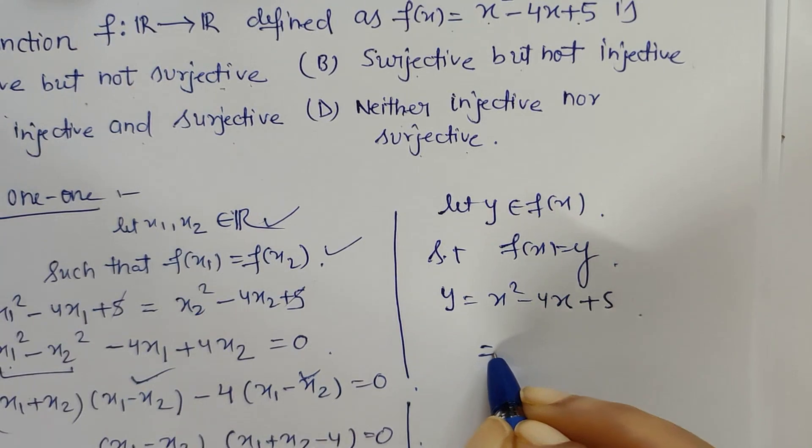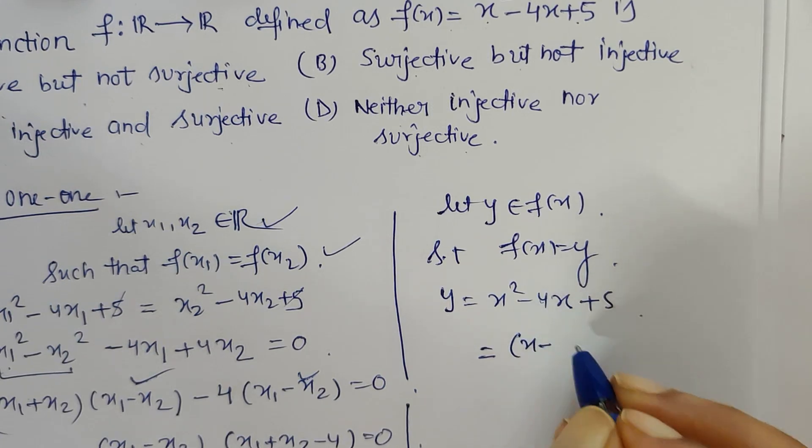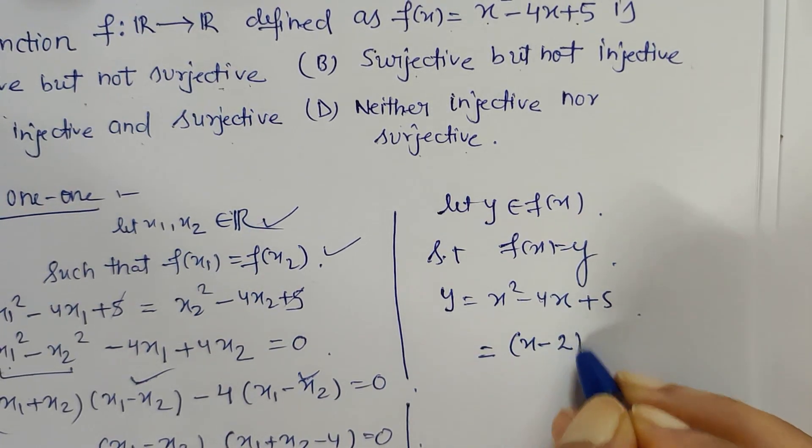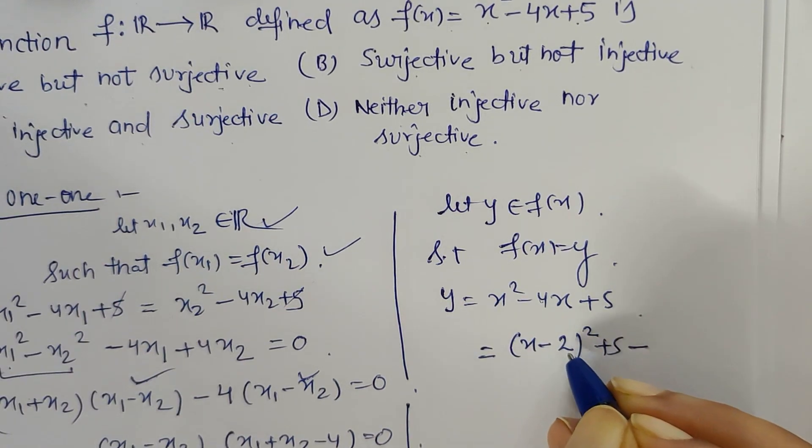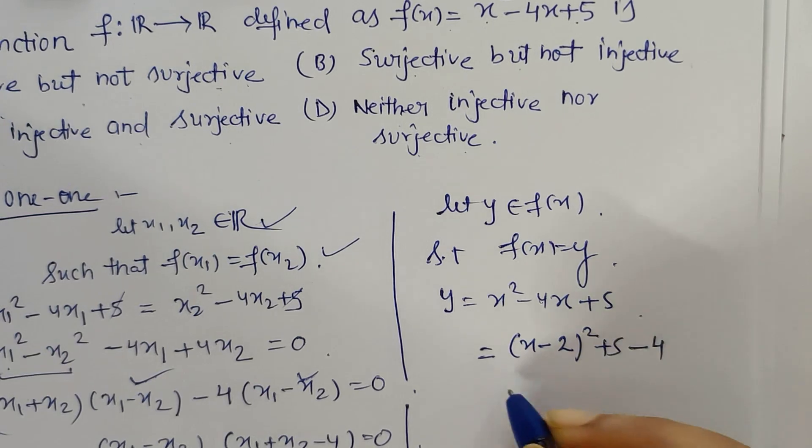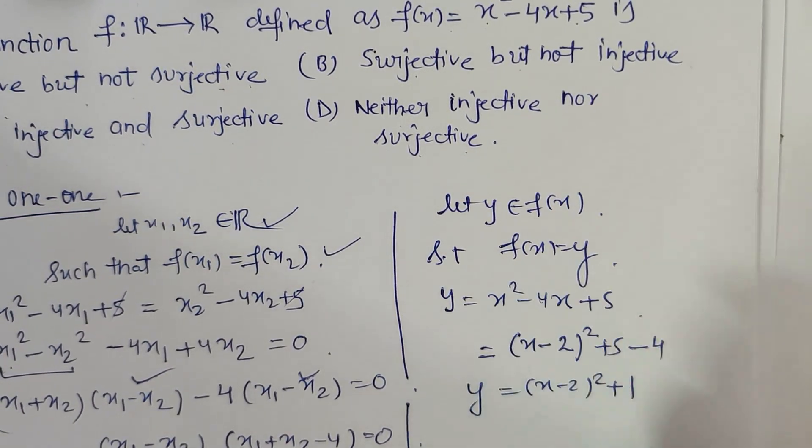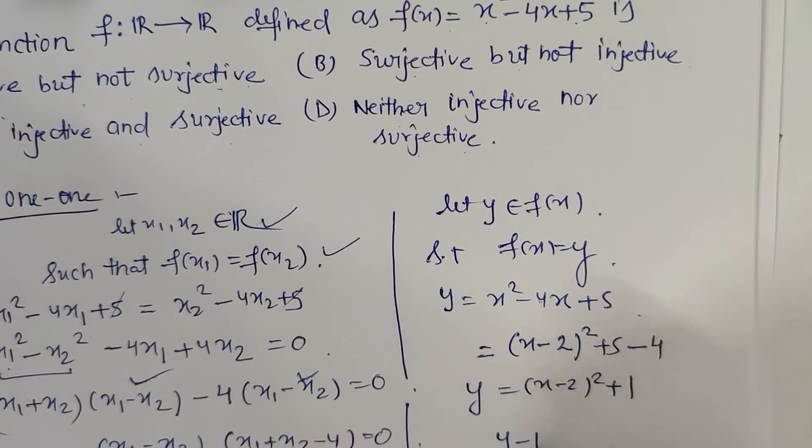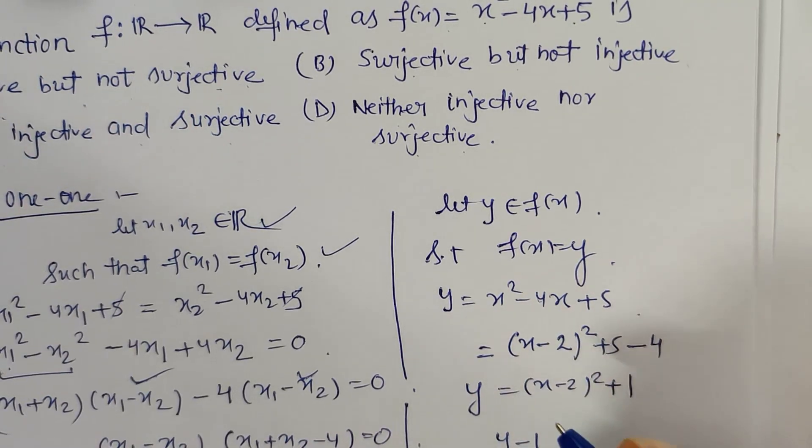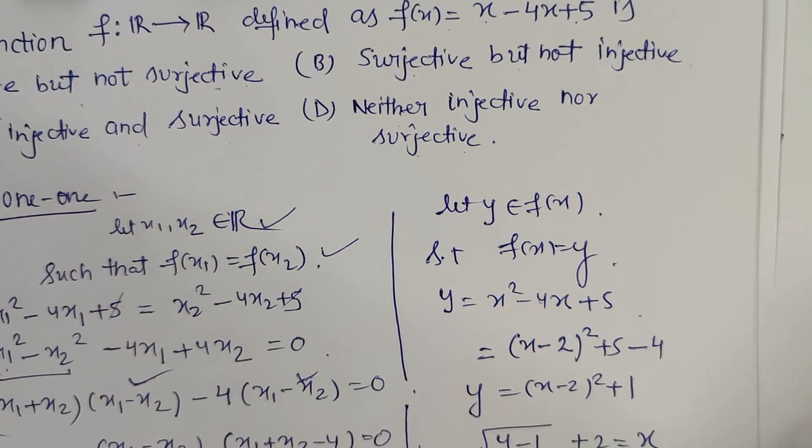Let's use the completing the square method: (x - half of the coefficient of x, which is 2)² + 5, and always subtract whatever constant is present. So I'm left with (x - 2)² + 1. Here I have y = (x - 2)² + 1, which is nothing but y - 1 if I shift 1 to the left-hand side. And x = √(y - 1) + 2 if I keep only x on the right-hand side.